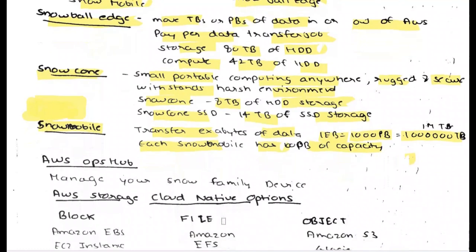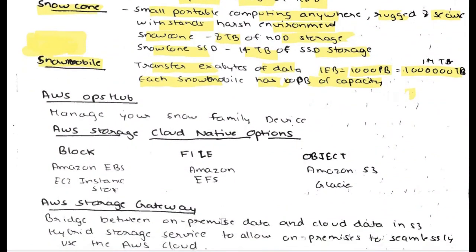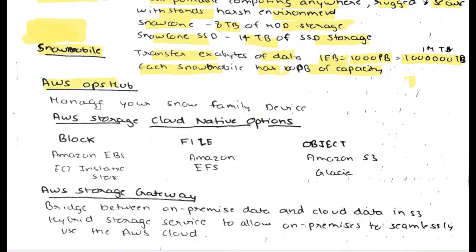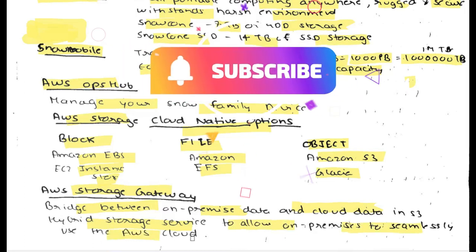AWS OpsWork manages your Snow Family devices — it tracks how much data and compute capacity you have. For AWS cloud-native storage options: for block storage we have Amazon EBS and EC2, for file storage we have Amazon EFS, and for object storage we have Amazon S3. AWS Storage Gateway is a bridge between on-premise data and cloud data in S3. It is a hybrid storage service that allows on-premise systems to seamlessly use AWS.